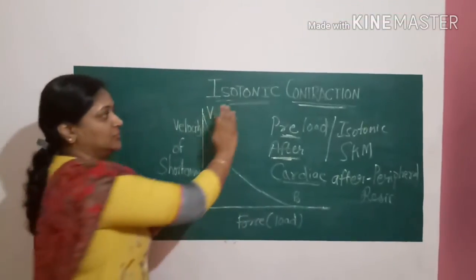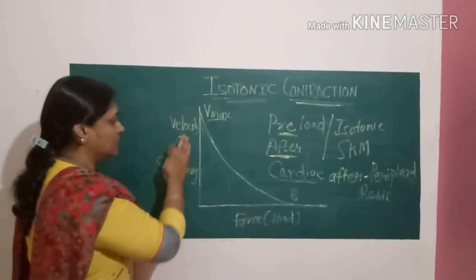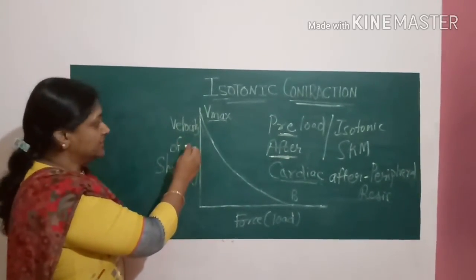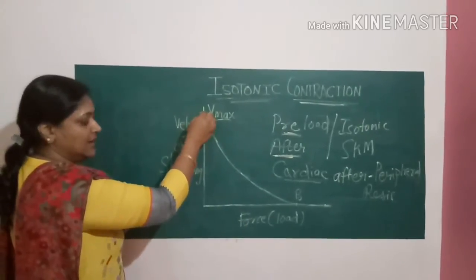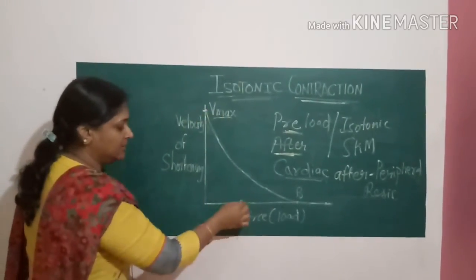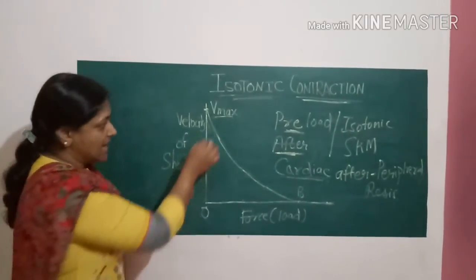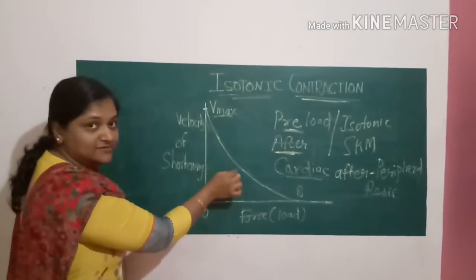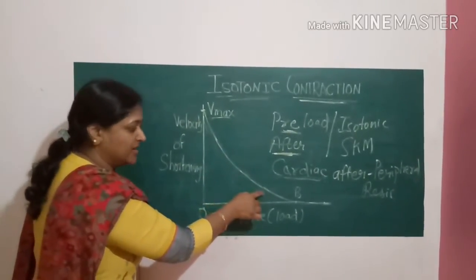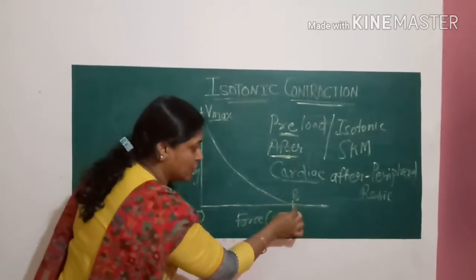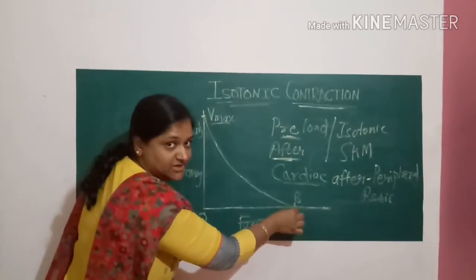Isotonic contraction can be best explained by the force-velocity relationship. The velocity of shortening of a muscle is highest when there is zero load. As the load increases, the velocity of shortening decreases. There is a point where there is no shortening at all — this is isometric contraction, occurring when the load is maximum.